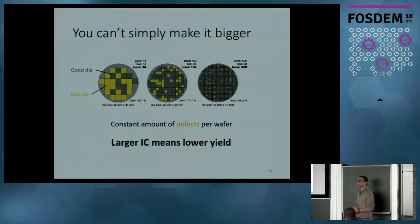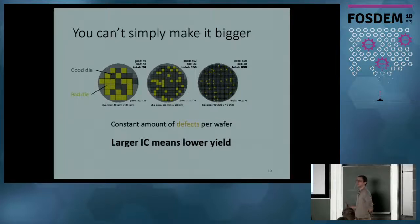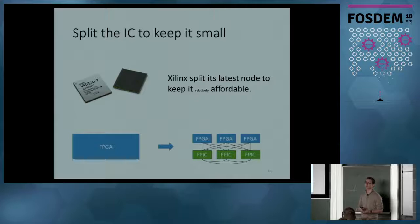Another problem is that you can't simply make the IC bigger. When you look at a wafer — this big circle with a rainbow pattern — there are a constant amount of defects on the wafer. If the ICs are bigger, you will have a lower proportion of good dies, which is what we call the yield. If the yield is lower, the chip will be more expensive. For example, what Xilinx did for the latest Virtex-7 technology is, instead of having one big IC for the FPGA, they split it into smaller ICs that are easier to manufacture and then interconnected together inside the package — it's more affordable.